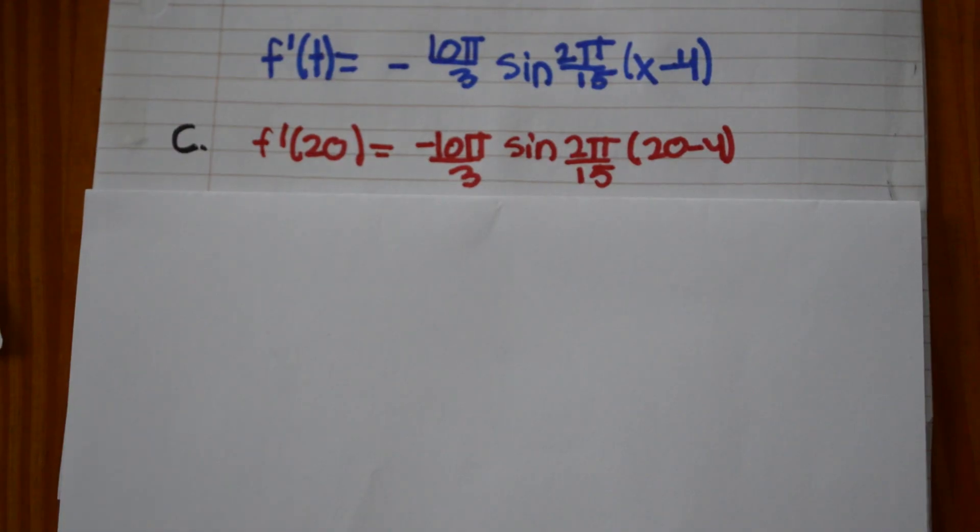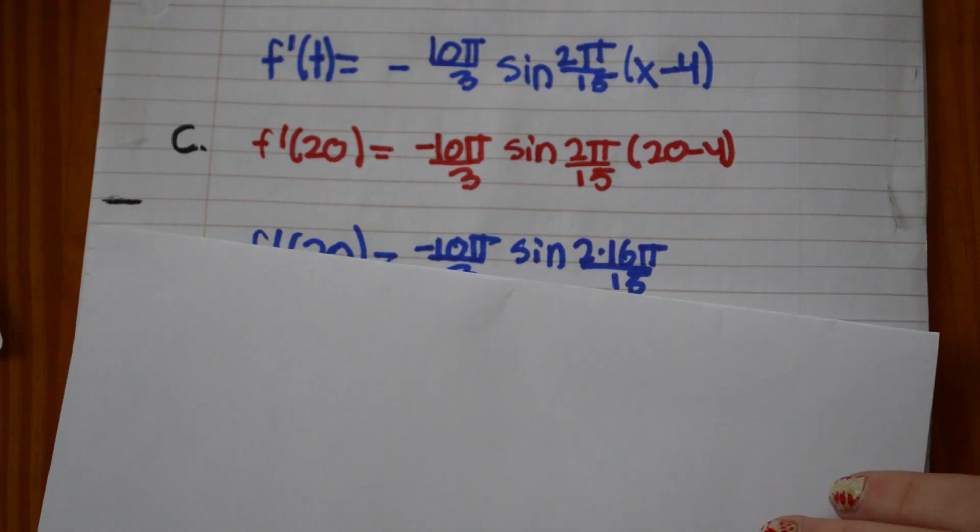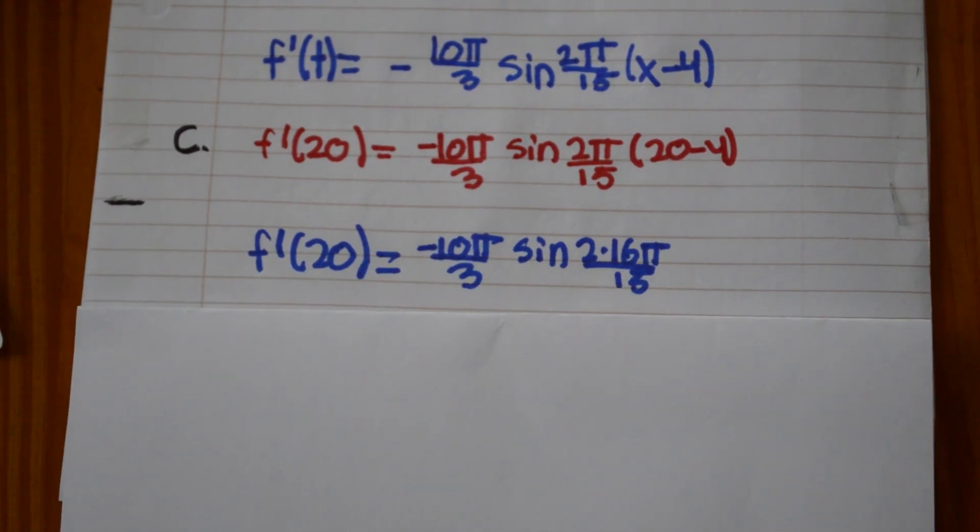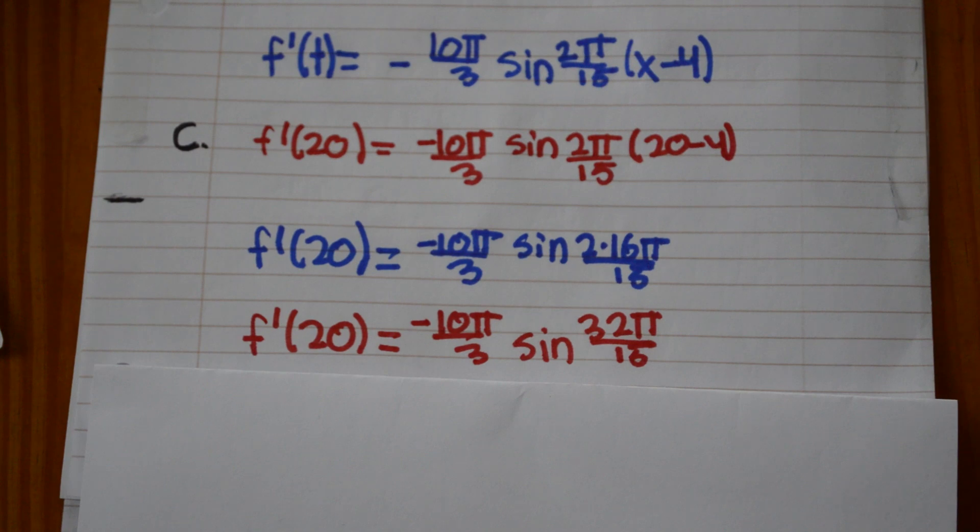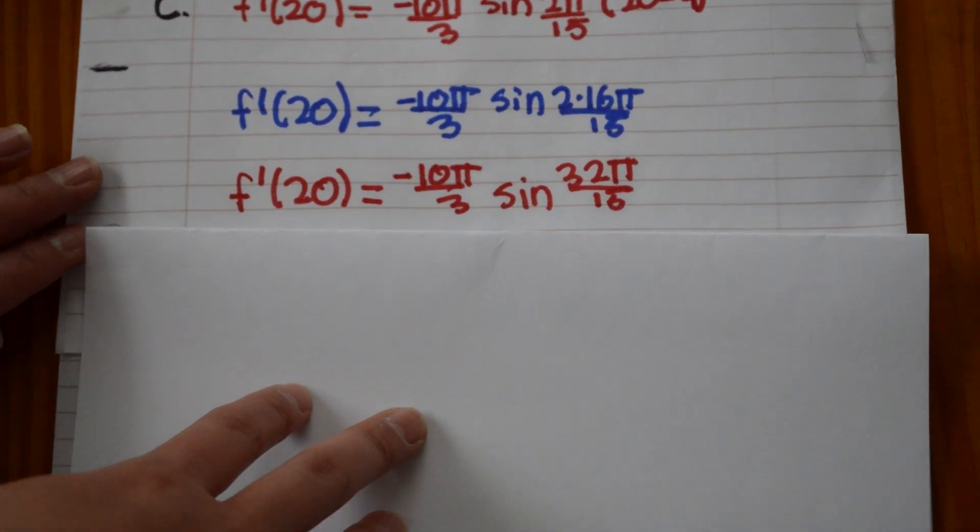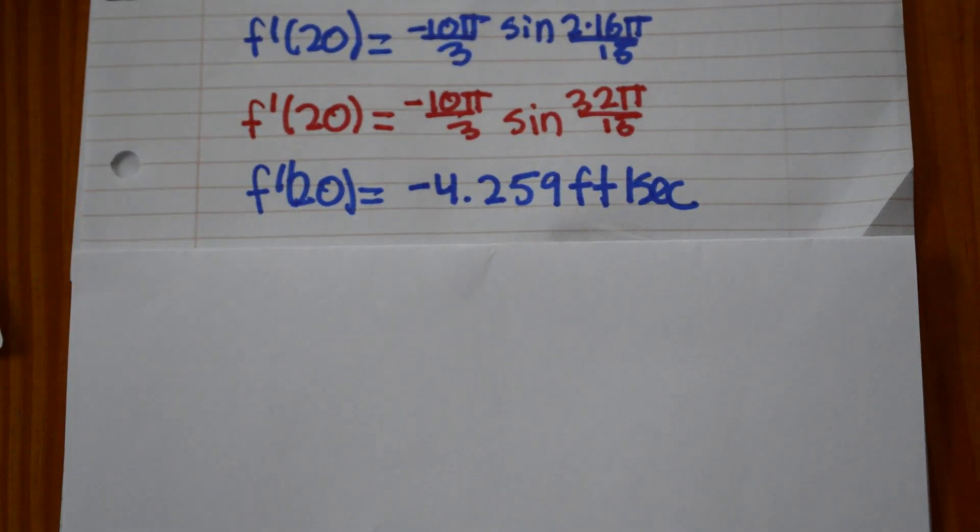Once we have the function f'(t), we can plug in t as 20. Then you get negative 10π over 3 sine 2π over 15 times 20 minus 4. This results with negative 10π over 3 times sine 2 times 16π divided by 15. From there, you get negative 10π over 3 times the sine of 32π over 15. When you use the calculator to calculate the value, you get negative 4.259 feet per second.